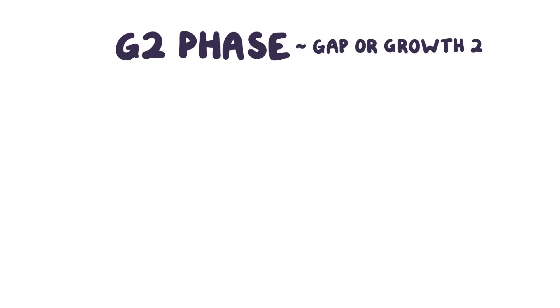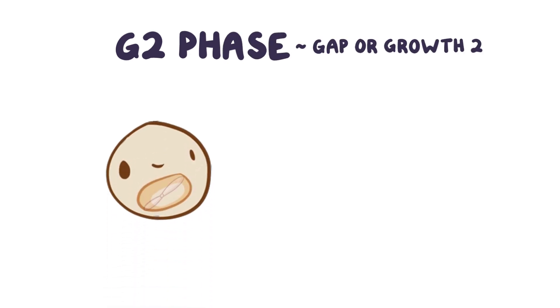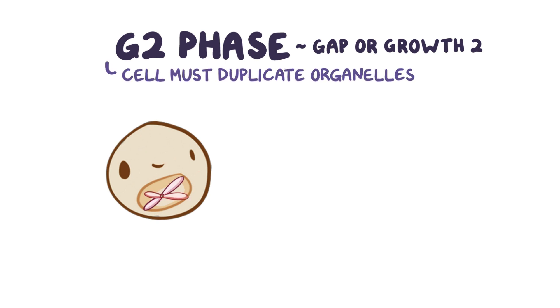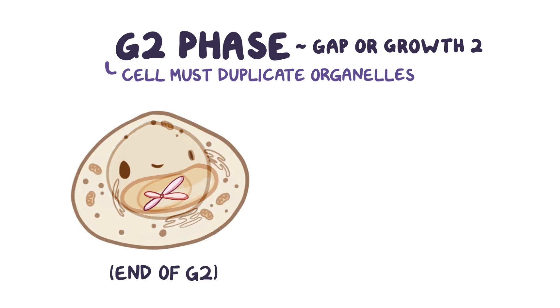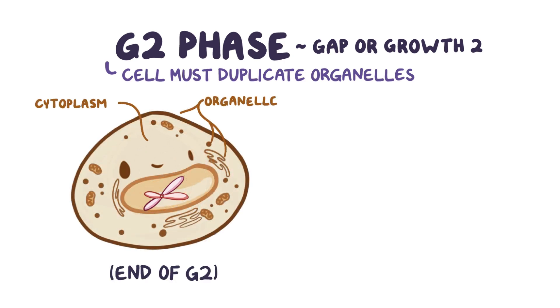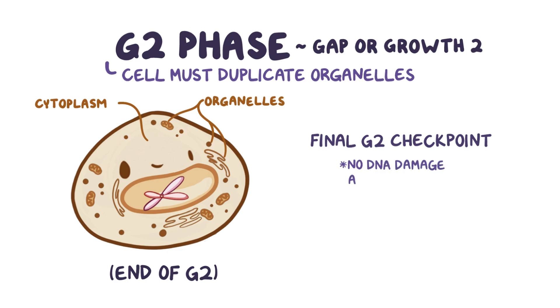The cell can now enter the G2 phase. G2 stands for gap, or growth, 2. Even after synthesizing copies of the DNA, the cell still has to duplicate organelles so that there are enough for both daughter cells. By the end of G2, the cell looks like a big balloon of cytoplasm and organelles, just waiting to split. Before it can do that, it has to first pass the final G2 checkpoint, and if there's no DNA damage after replication, the cell can enter mitosis.